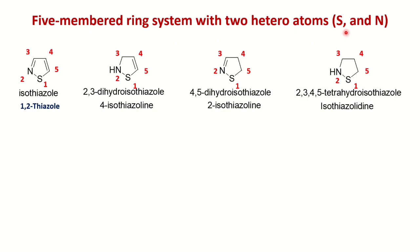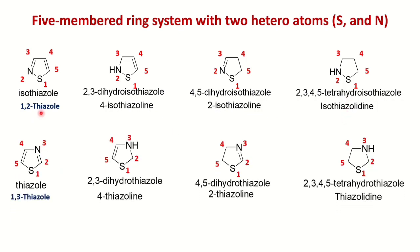For rings containing sulfur and nitrogen, sulfur receives the first preference. The ring with sulfur at position 1 and nitrogen at position 2 is 1,2-thiazole (trivial name: isothiazole), written as 'thia' + 'aza' + 'ole'. With sulfur at position 1 and nitrogen at position 3, it is 1,3-thiazole (trivial name: thiazole). The completely saturated forms are thiazolidine and isothiazolidine.